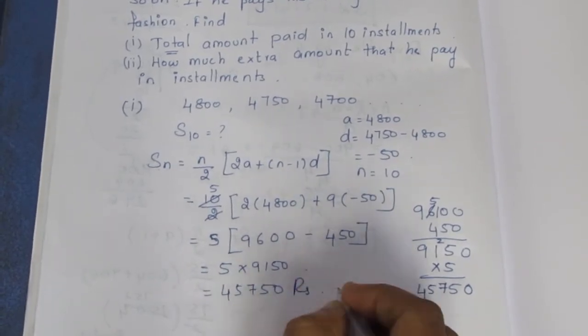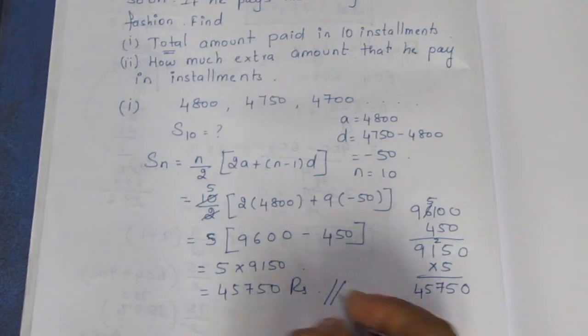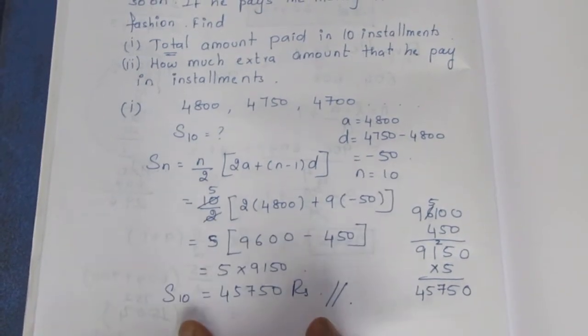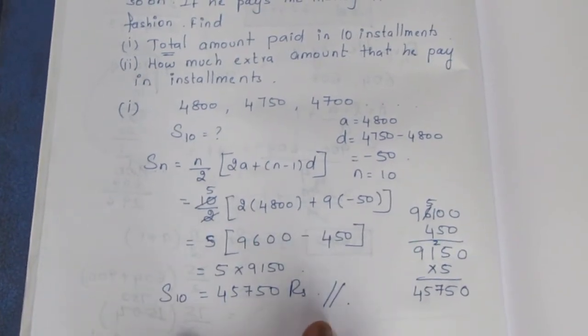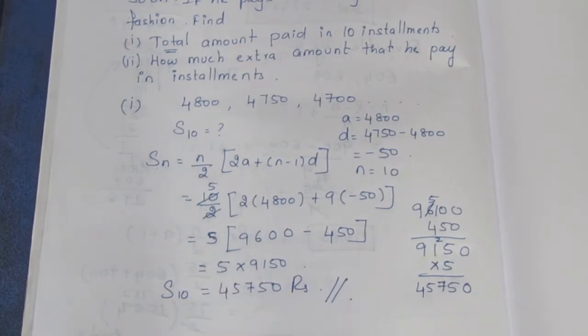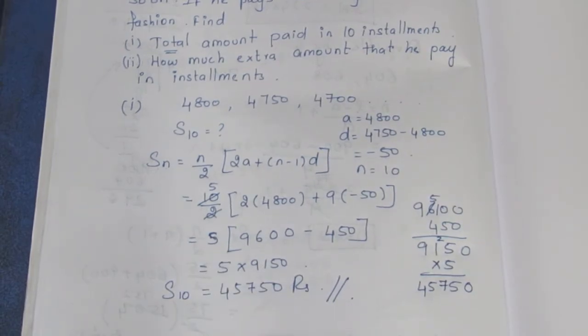The total amount paid in 10 installments is 5 into 9150, which equals 45,750 rupees.